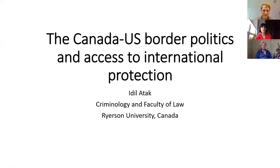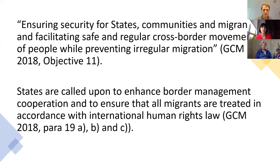My presentation is on the border politics between the U.S. and Canada, and I'm interested in exploring the issues of access to international protection. I will start with excerpts from the Global Compact on Migration. One of its objectives, Objective 11, says that the aim of the Compact is to ensure security for states, communities, and migrants, and facilitate safe and regular cross-border movements while preventing irregular migration.